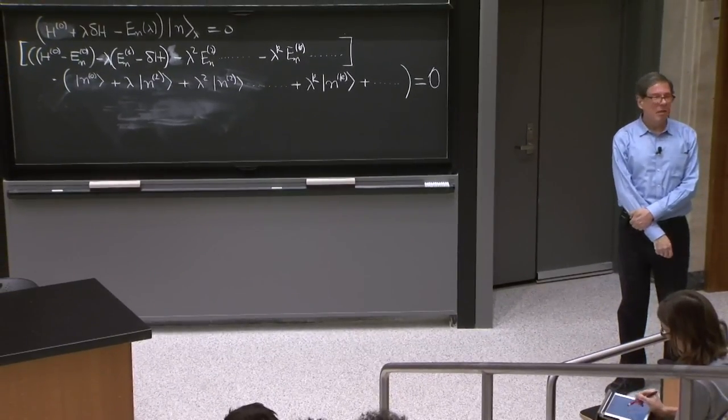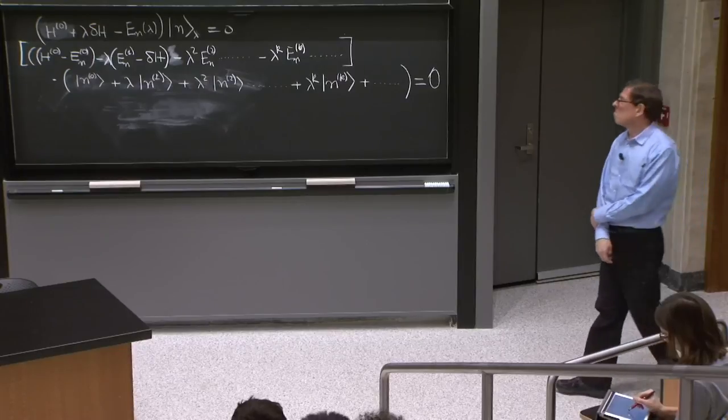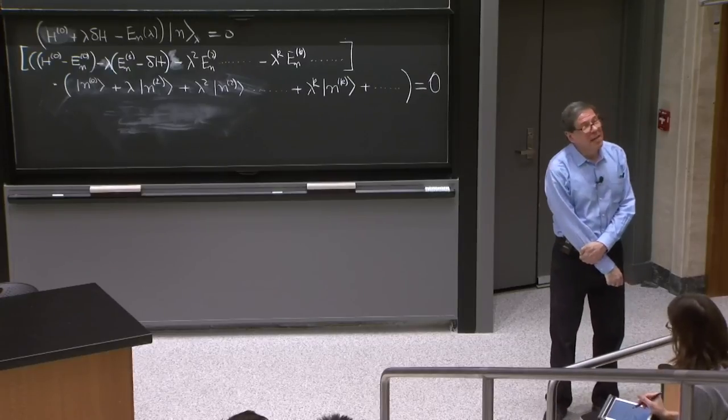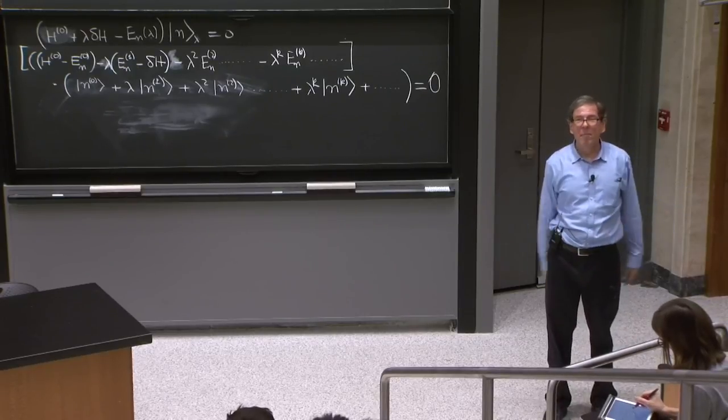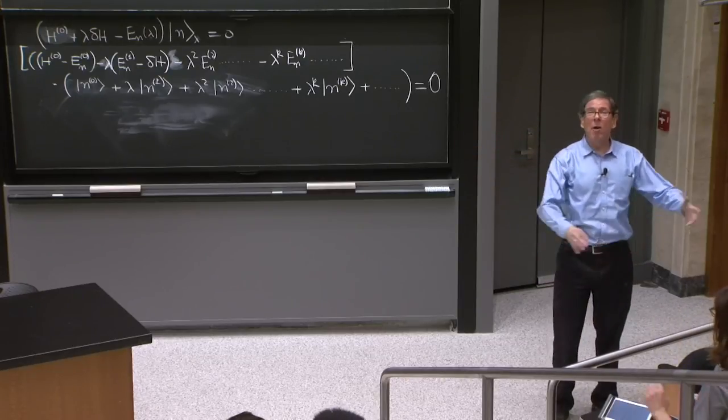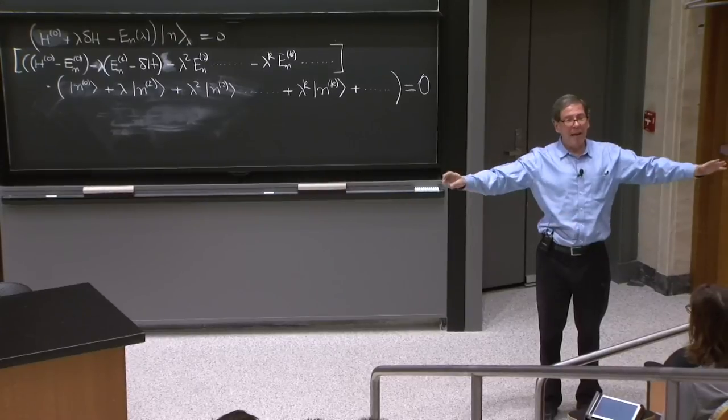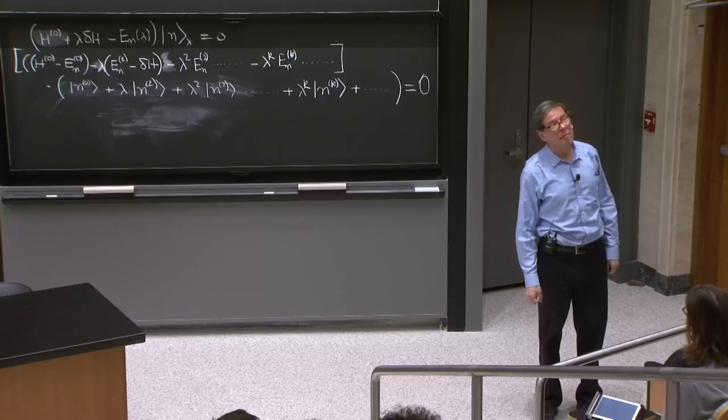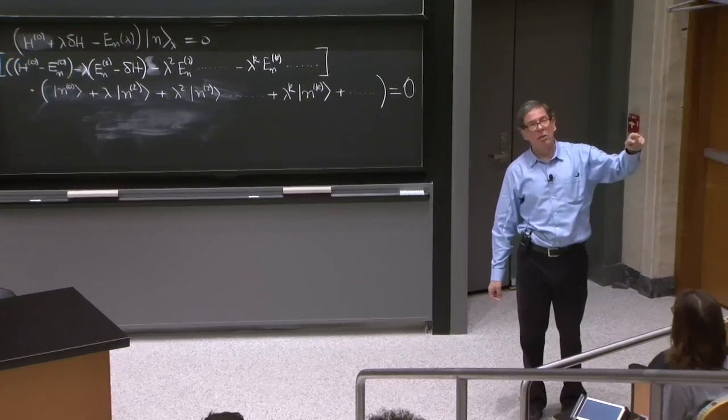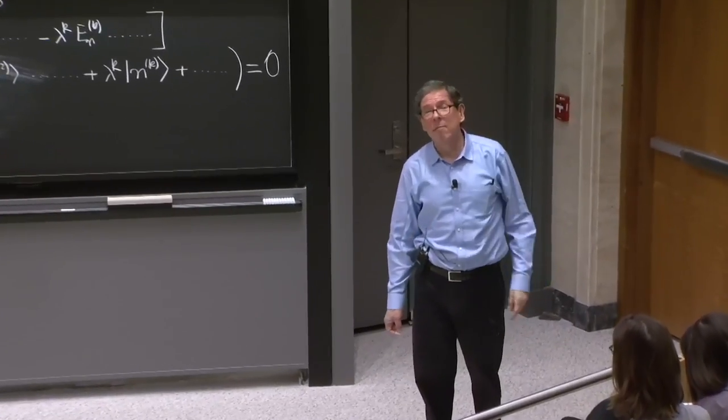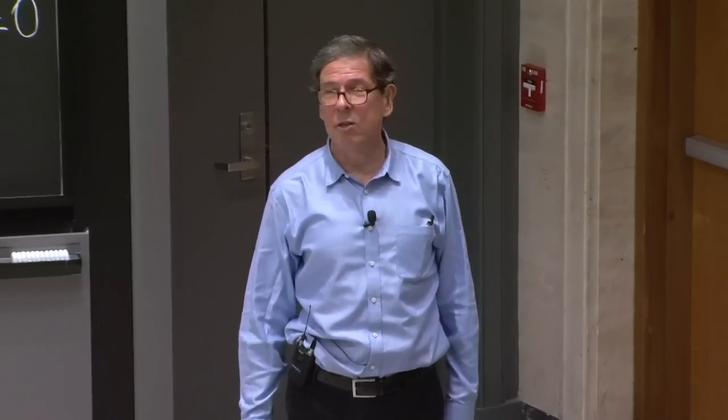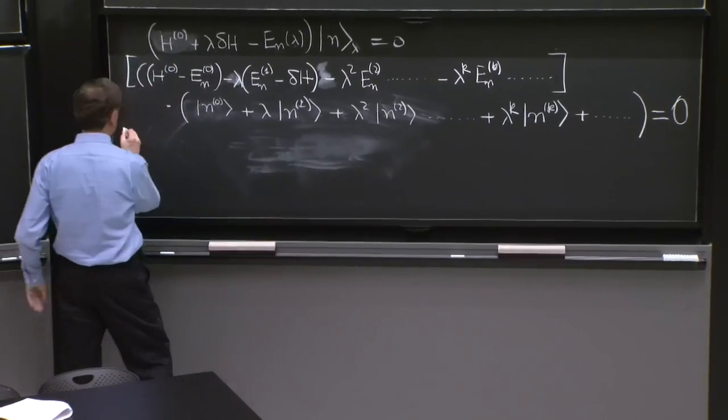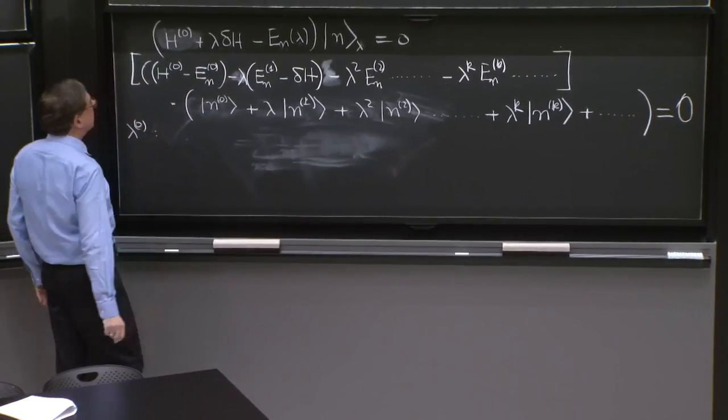Looks daunting, but it's not. What should we do? Well, here is again lambda helpful for you. Lambda is a parameter. This left hand side is a polynomial on lambda. It should vanish for all values of lambda, because the Schrodinger equation should hold for all values of lambda. When a polynomial vanishes for all values of lambda, all the coefficients must vanish of the polynomial. Therefore, we must look at what is 0th order in lambda here and see what we get.